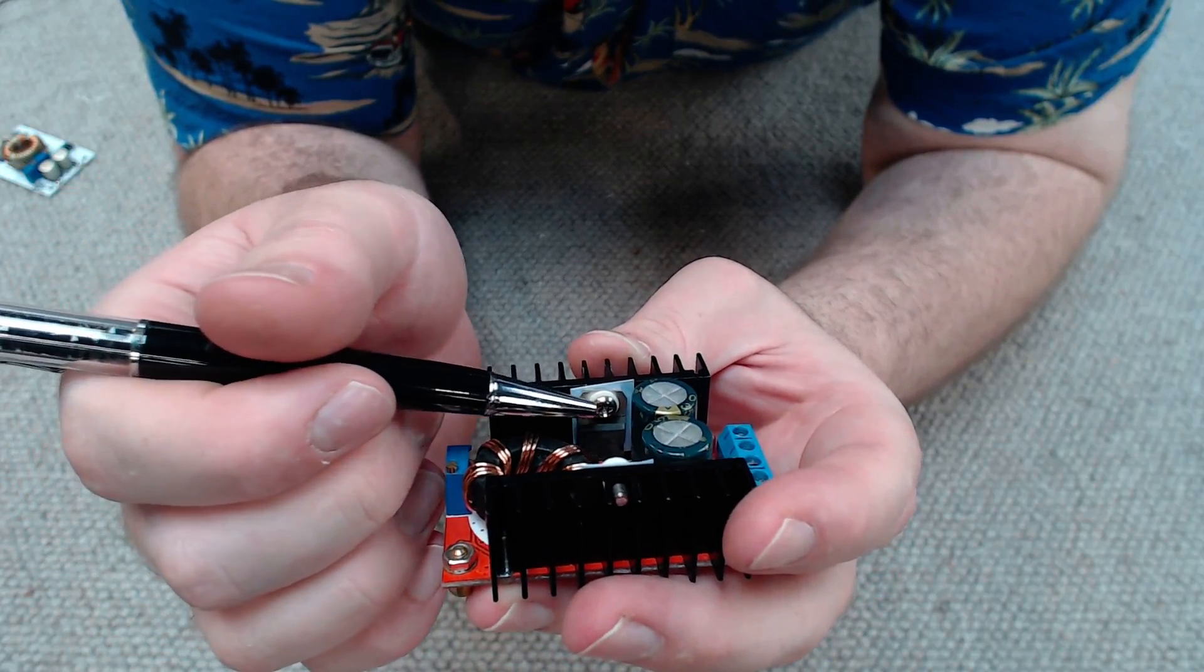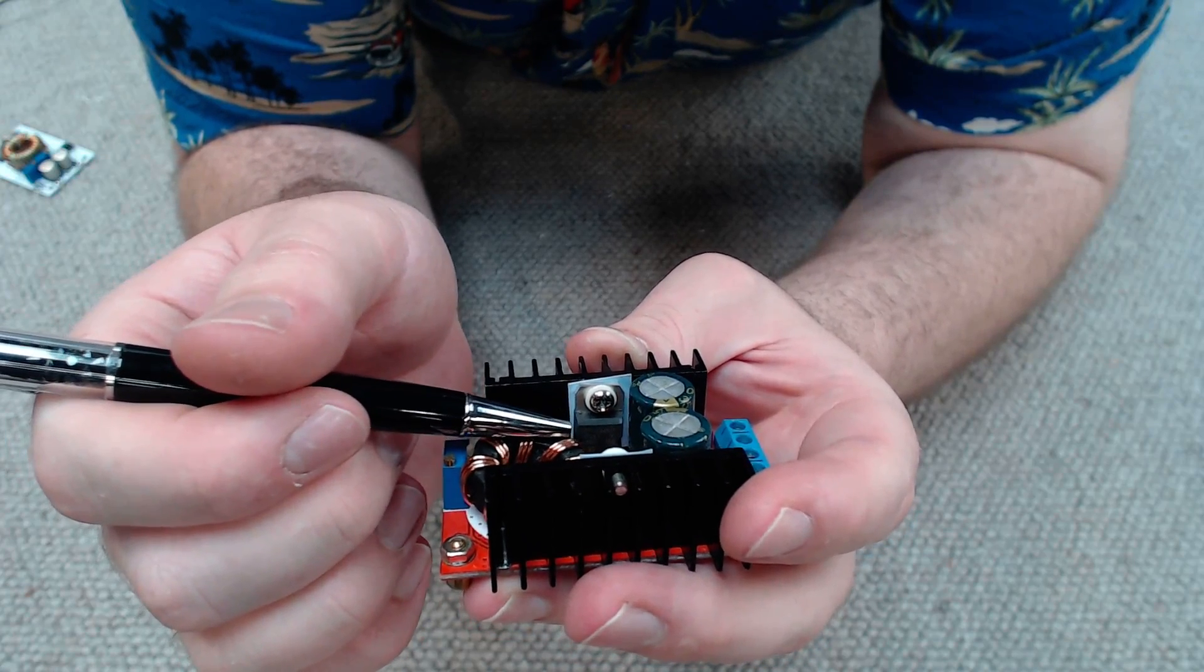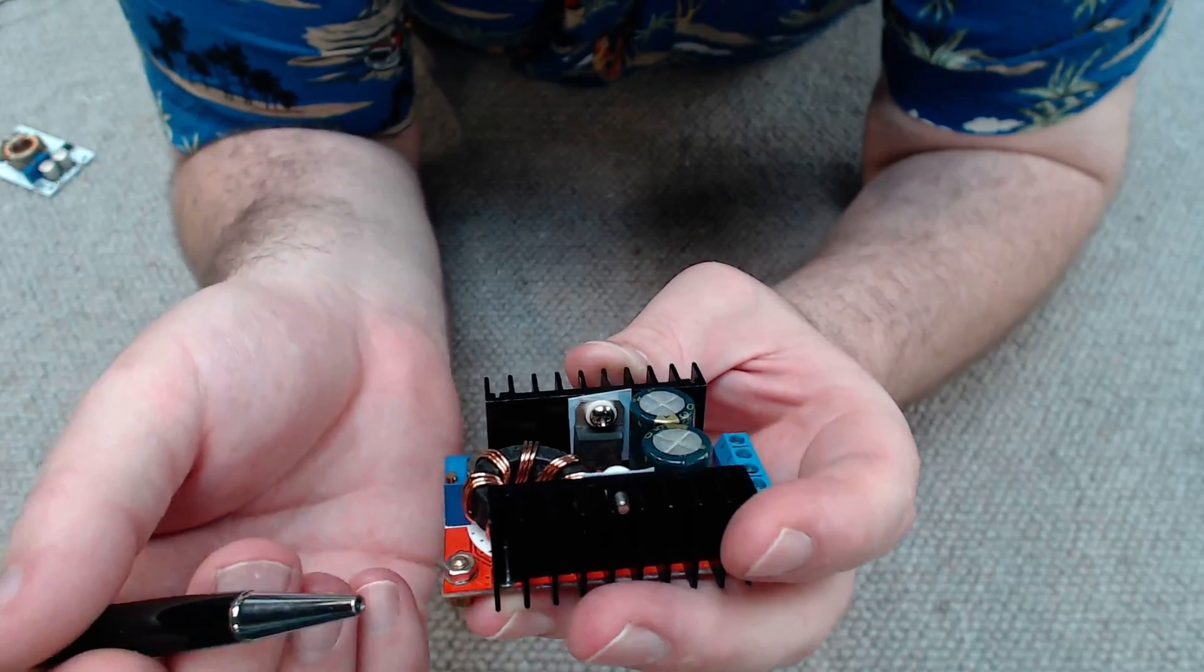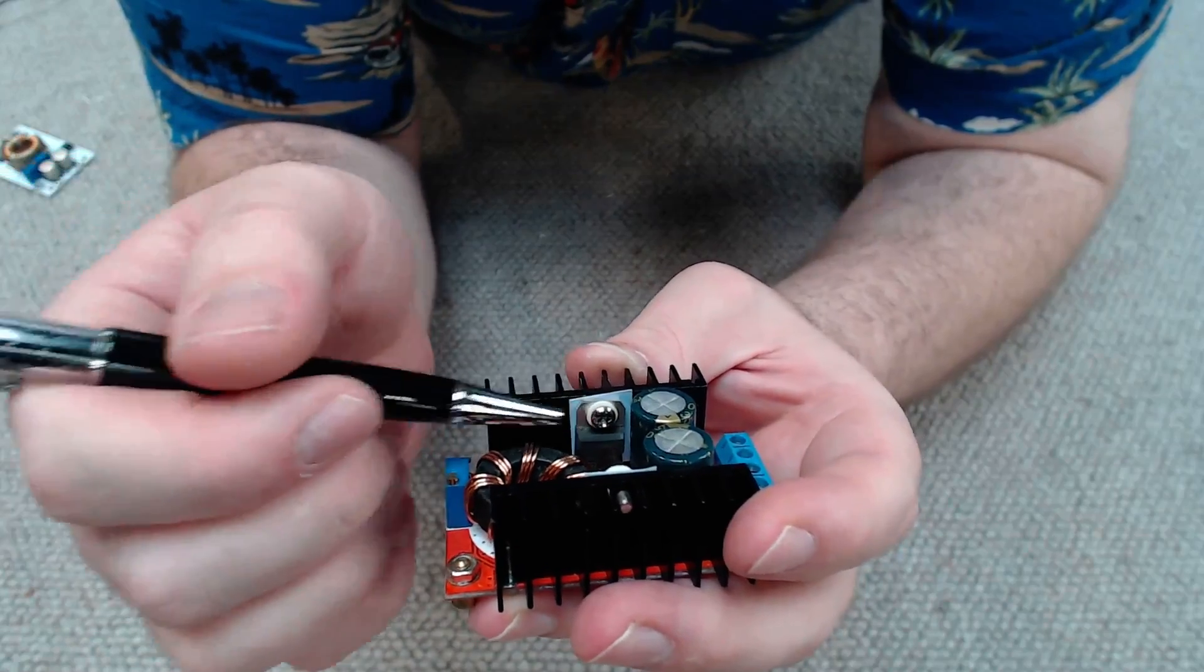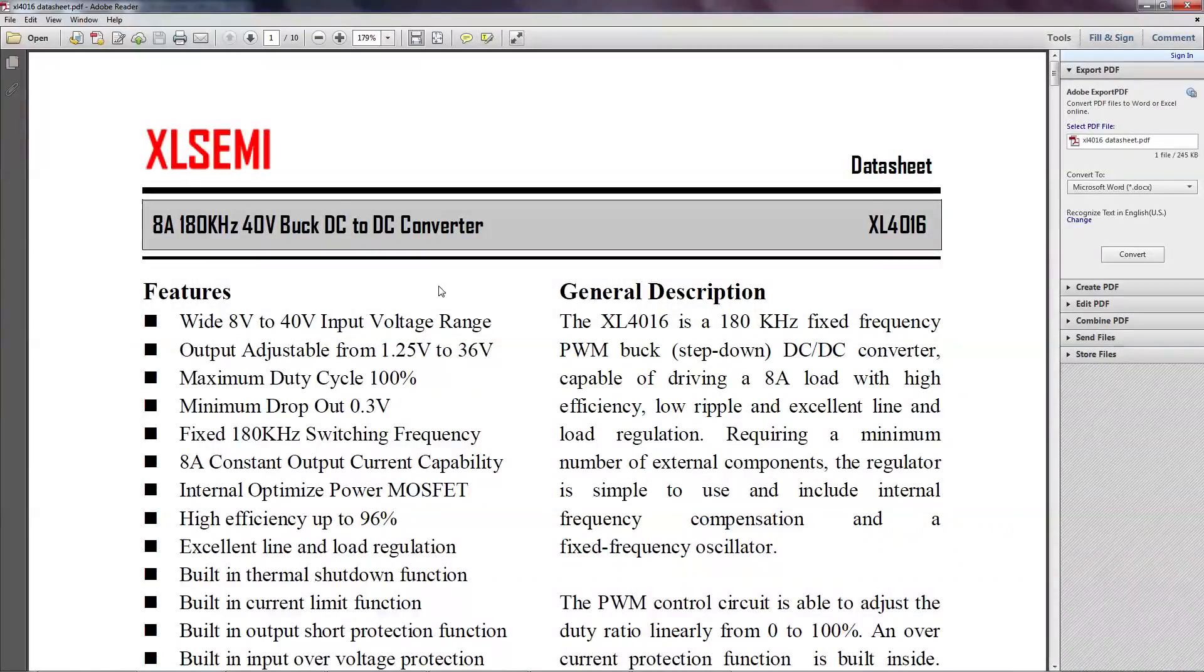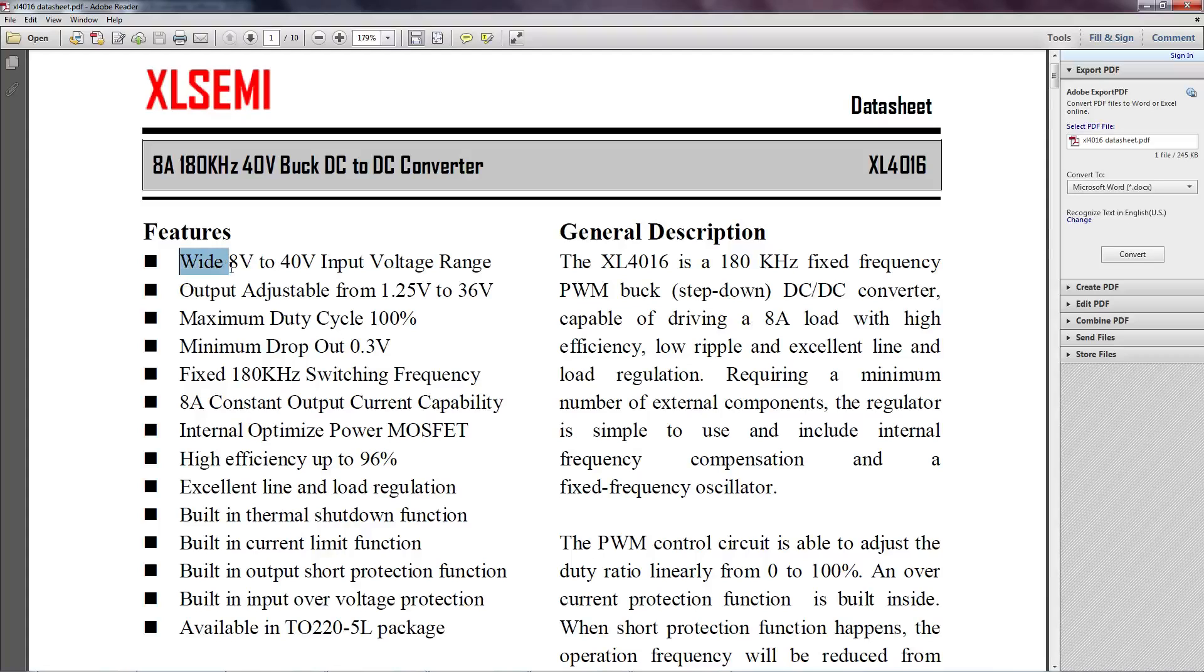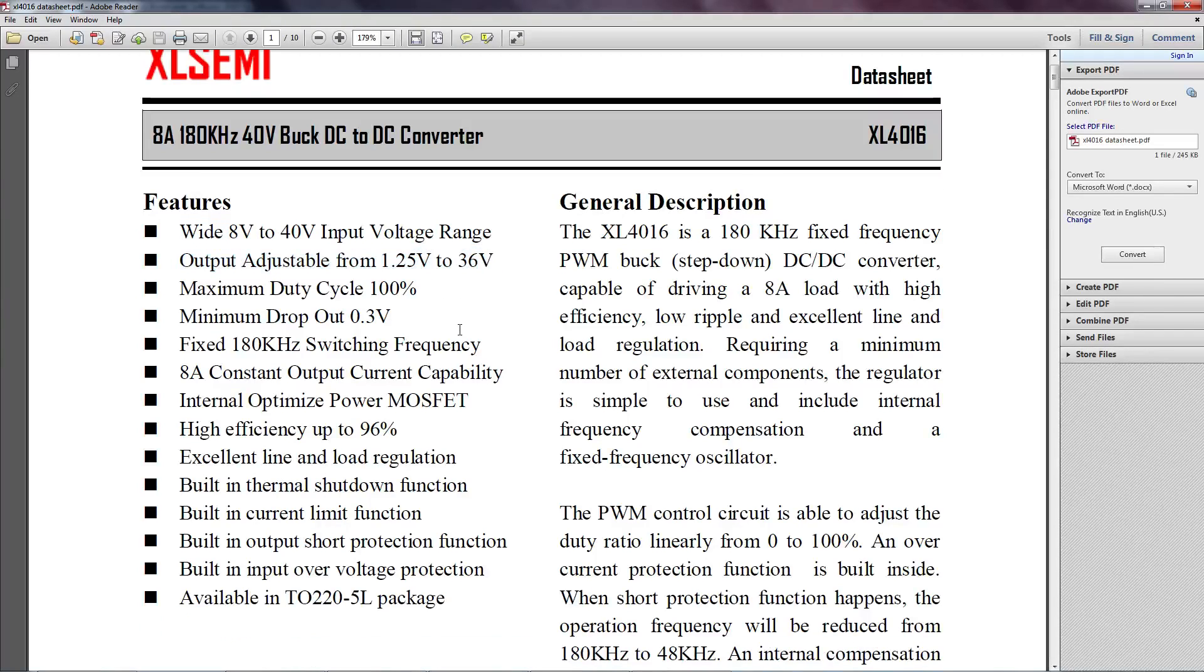But what can we do to protect ourselves from this? Well what we can do is once we've received the unit we can have a look. The camera's not going to pick it up because it's very faint, but we can have a look at the semiconductor ICs here. And if we Google the part numbers which will be printed on the face here, we should find data sheets online for the ICs. And then we'll be able to work out how much current this unit can actually handle. So here's an example of the data sheet you can find for those semiconductor ICs. We can see here that it features 8 to 40 volt input range, adjustable from 1.25 to 36, a dropout voltage at 0.3, and it can handle a maximum of 8 amps constant current.